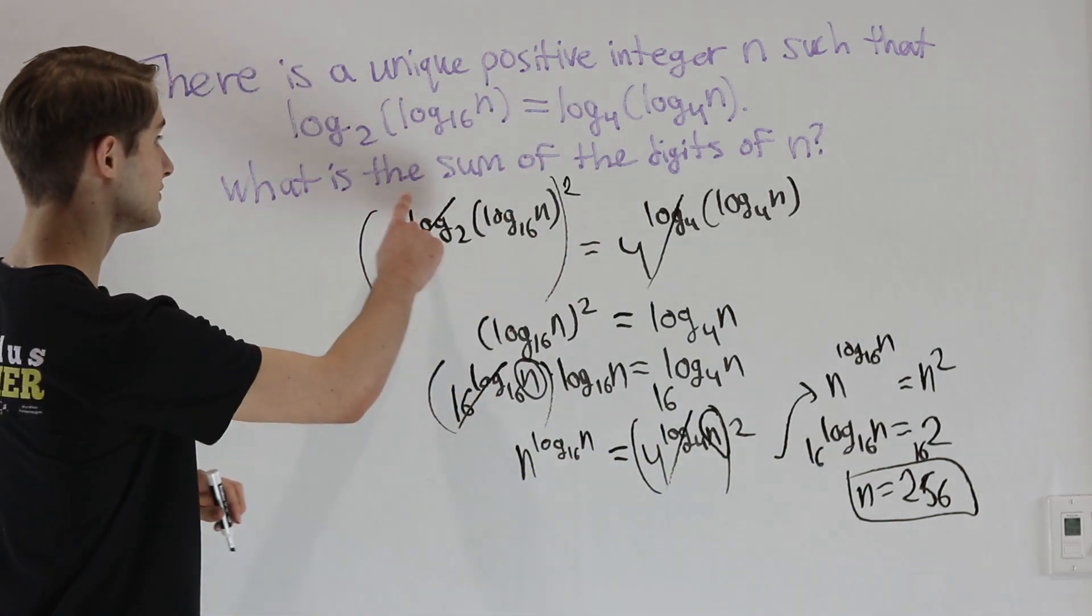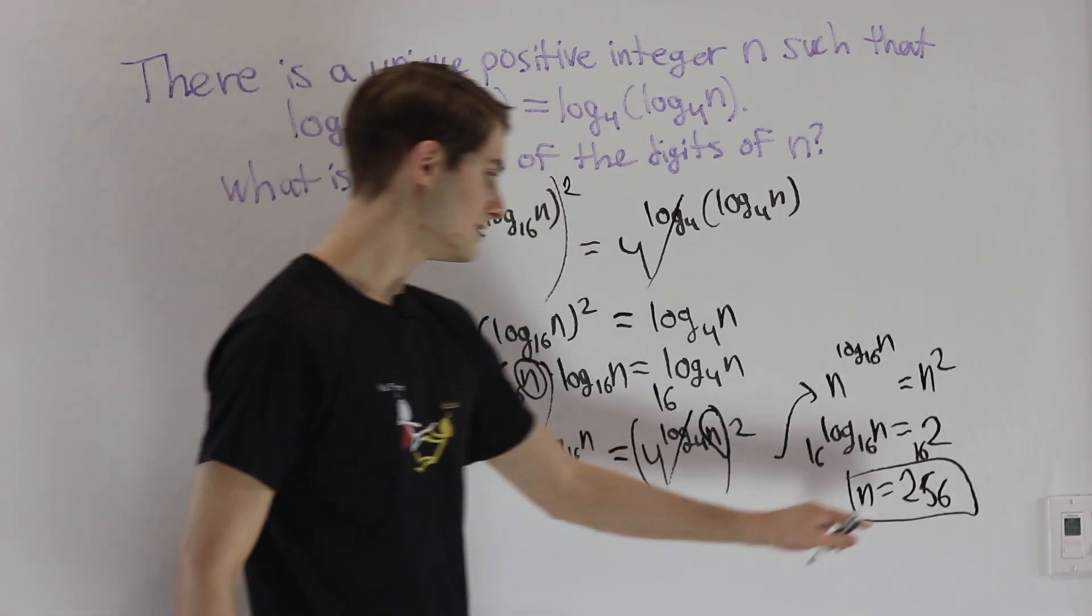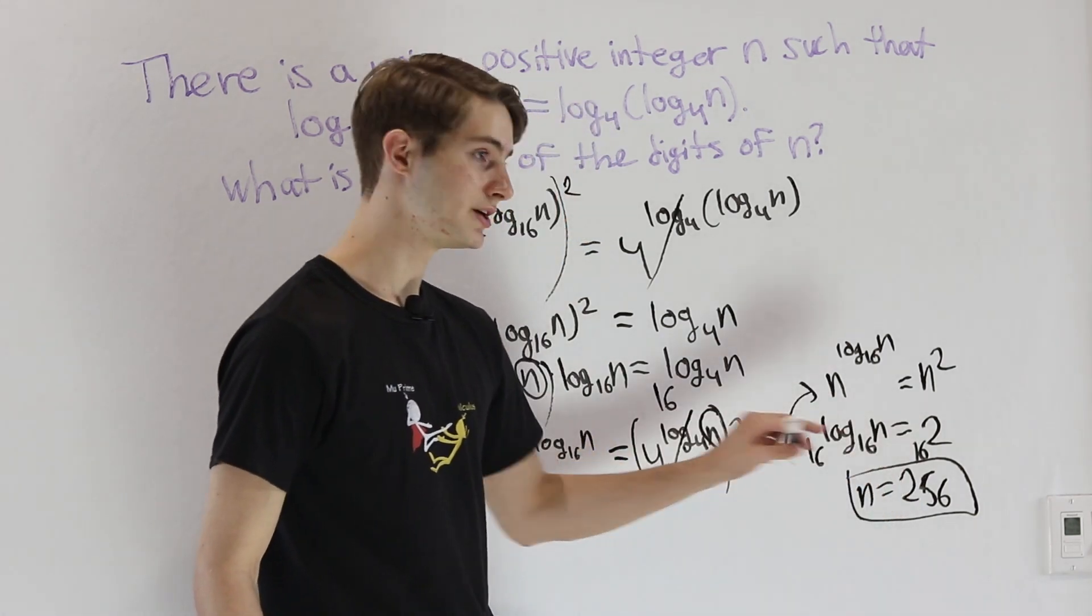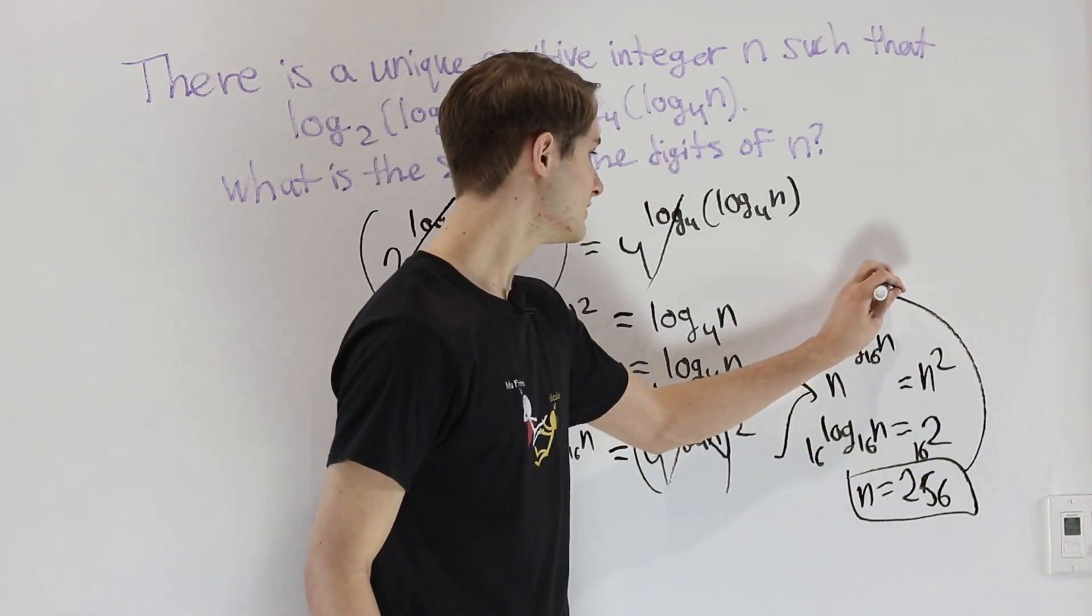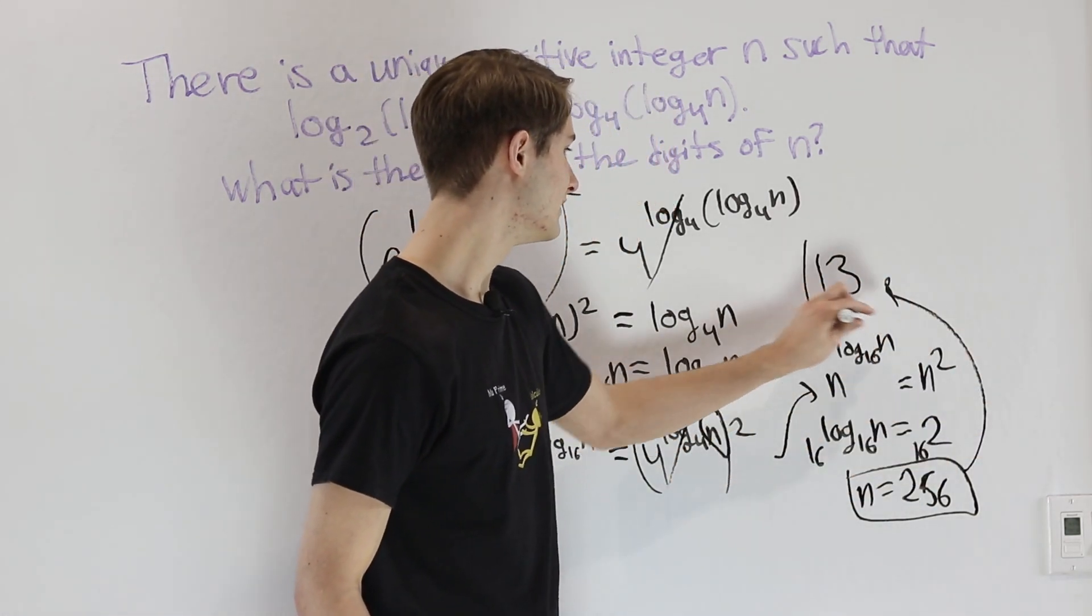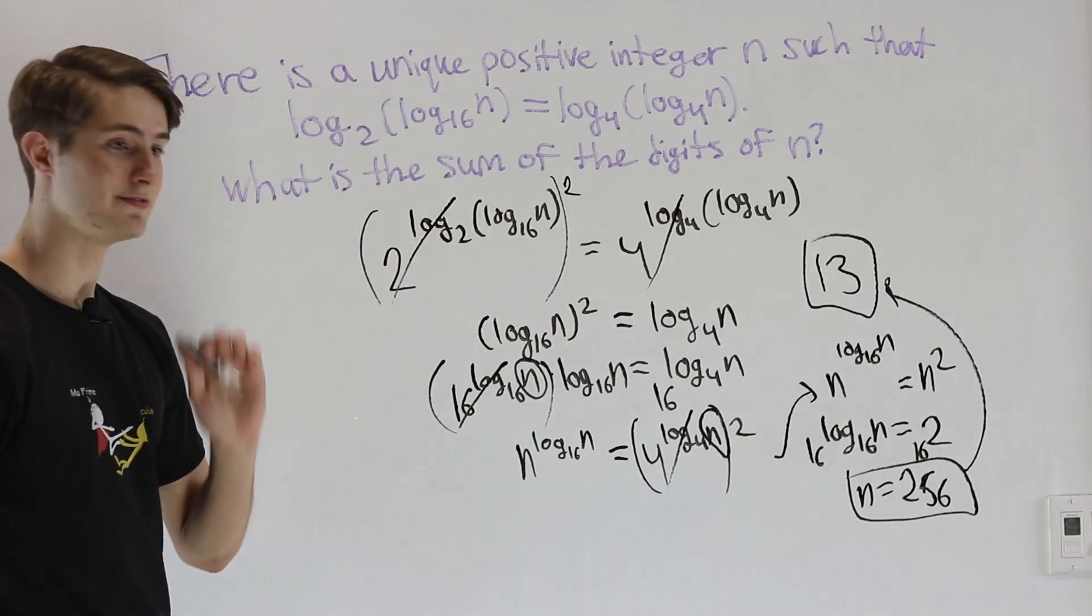If we want to find the sum of the digits of n, that's going to be 6 plus 5 plus 2, or in other words 13. That's going to be our sum of the digits of n.